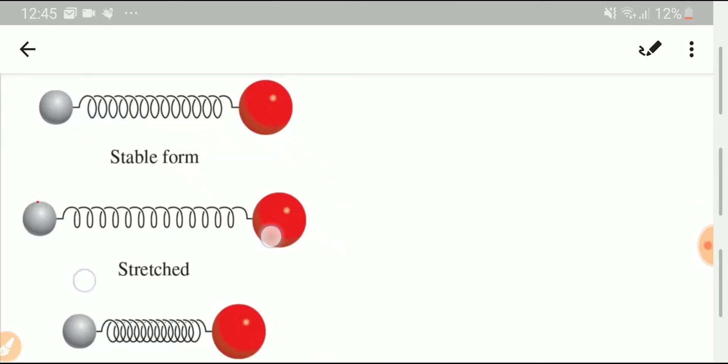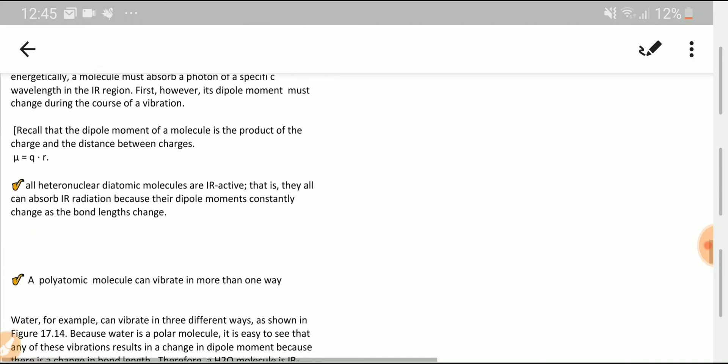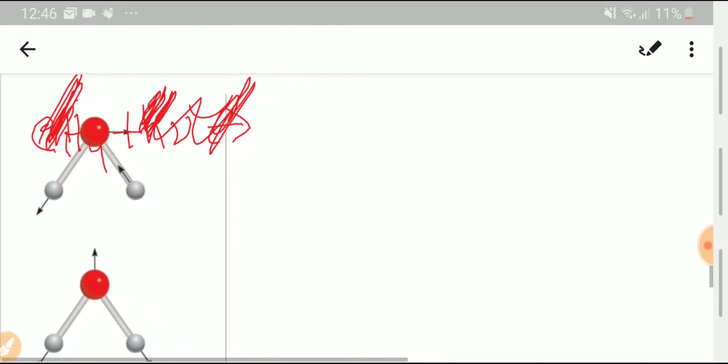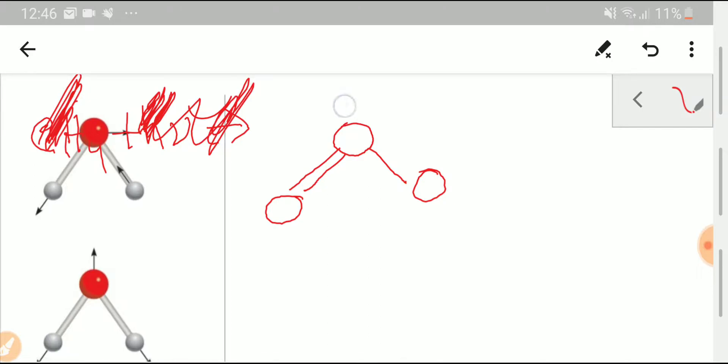Ozone has a bent shape due to presence of lone pair. Due to the V shape, the ozone molecule is a polar molecule.